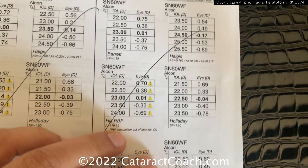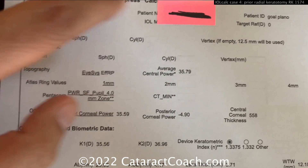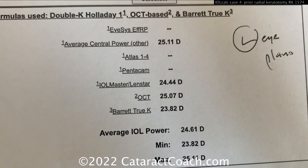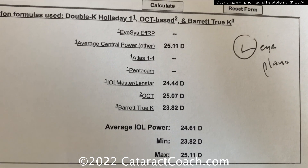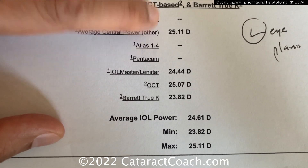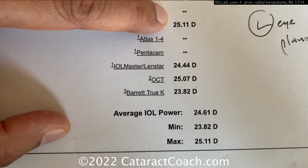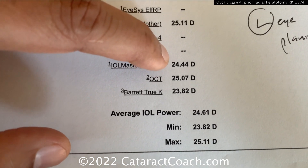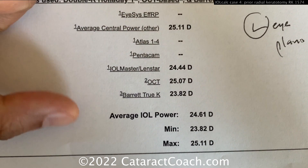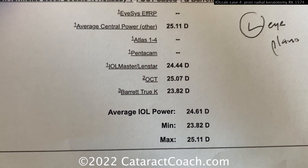You can go to the online ASCRS calculator for the same patient — left eye, goal of plano — put in all the data you have. Using the average central power, we're choosing a 25-diopter lens for plano. Just based on the IOLMaster lens data, maybe 24 and a half, which we saw earlier with the Haigis. OCT-based comes to 25 diopters. Barrett True K — I worry about that one. So the average lands around here.